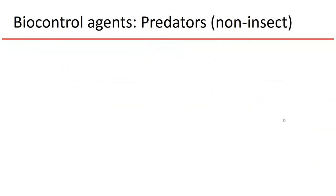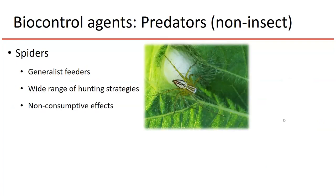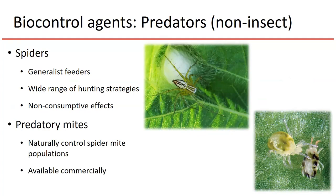For non-insect predators, there are two major groups. The first are spiders — the quintessential generalist, especially web-building spiders, which will feed on anything they come across. They have a wide range of hunting strategies and can even have non-consumptive effects: just the presence of spiders in the environment can sometimes repel pest insects, because they leave behind silk and chemical cues that some insect species can detect, causing them to avoid the plant. The other major group are predatory mites, which are very good natural controls of spider mite populations and can be bought commercially.